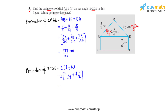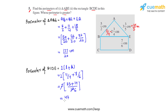These are unlike fractions, so we find the LCM of 4 and 6, which is 12. Multiplying 11/4 by 3/3 gives 33/12. Multiplying 7/6 by 2/2 gives 14/12. Adding 33 and 14 gives 47/12, and multiplying by 2 gives the perimeter of rectangle BCDE as 47/6 centimeters.